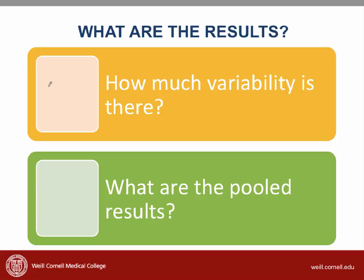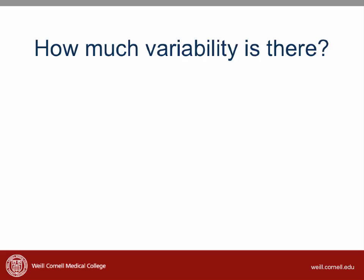If you remember from the introduction video, a systematic review pools evidence from multiple studies and synthesizes that evidence either quantitatively or qualitatively. We discussed the problems that arise when a clinical question is too broad. When looking at quantitative results of a meta-analysis, we want to see if there is a lot of variation in the results. If there is too much variation, then the results of the individual studies should not be pooled. There are a number of ways to assess variability.